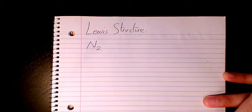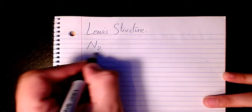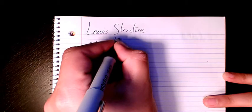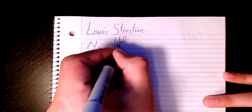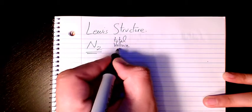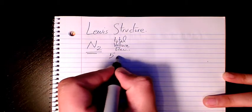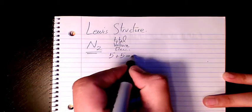So total valence electrons: we have two atoms of nitrogen, it's 5 and 5 for nitrogen, so it's going to be 10. So that's the total valence electrons.